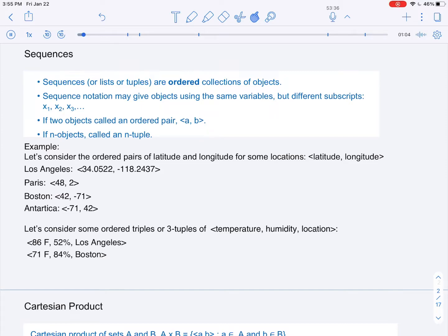One way to remember that the order matters in a sequence or an ordered pair is to consider what happens when we flip the latitude and longitude of Boston. The latitude of Boston is 42, and its longitude is negative 71. But when we flip that order,